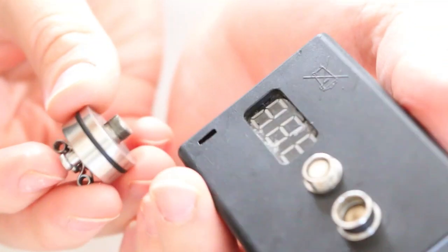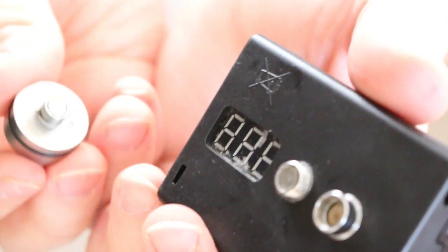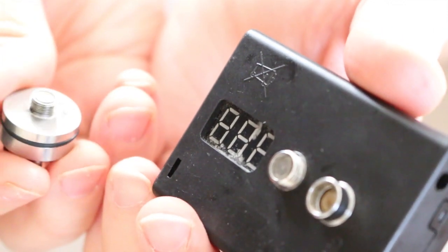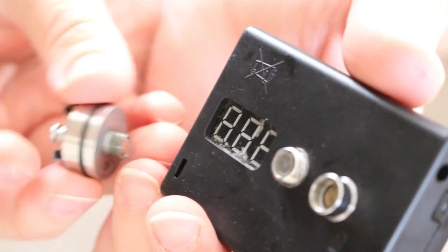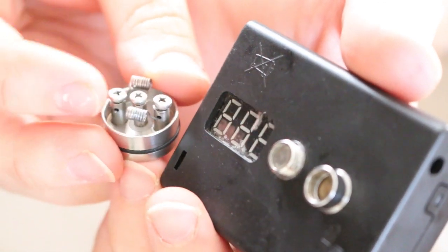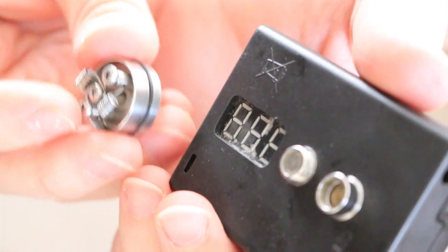Now unfortunately my ohm reader died on me. But I've built this so much that I know it's going to be a 0.32. That way I really don't need an ohm reader for this build. As long as I know that the contacts are being made on these posts, I don't really need an ohm reader for this one. But this will sit at a 0.32.